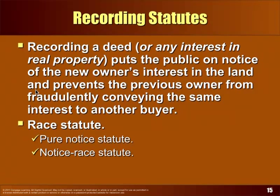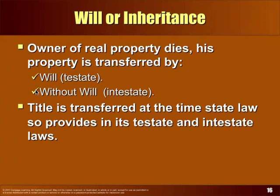You could get real property through a will or without a will — basically you can inherit it. If somebody dies with a will, it's called testate. If they die without a will, it's called intestate, which is not the best.